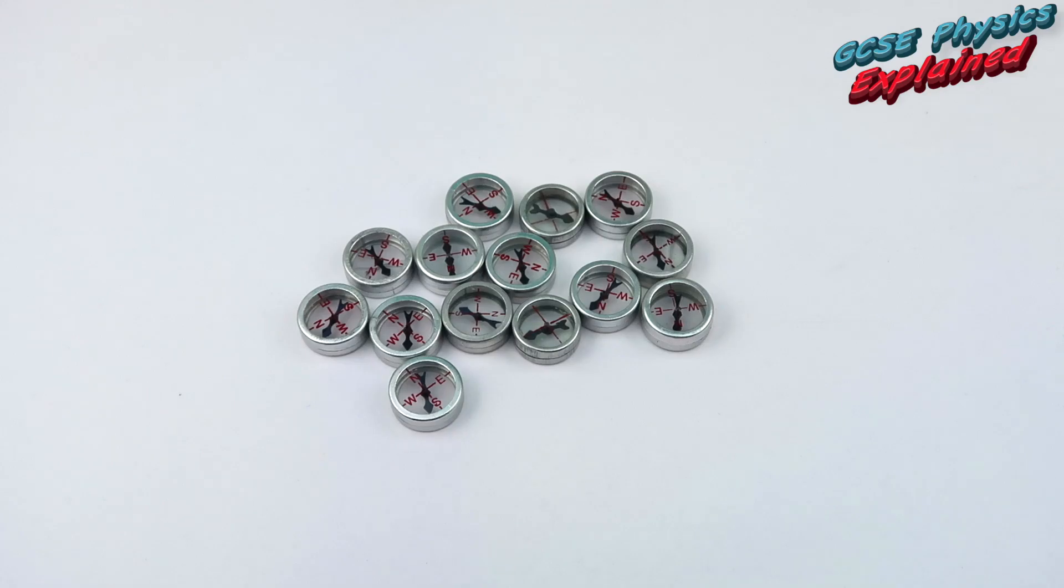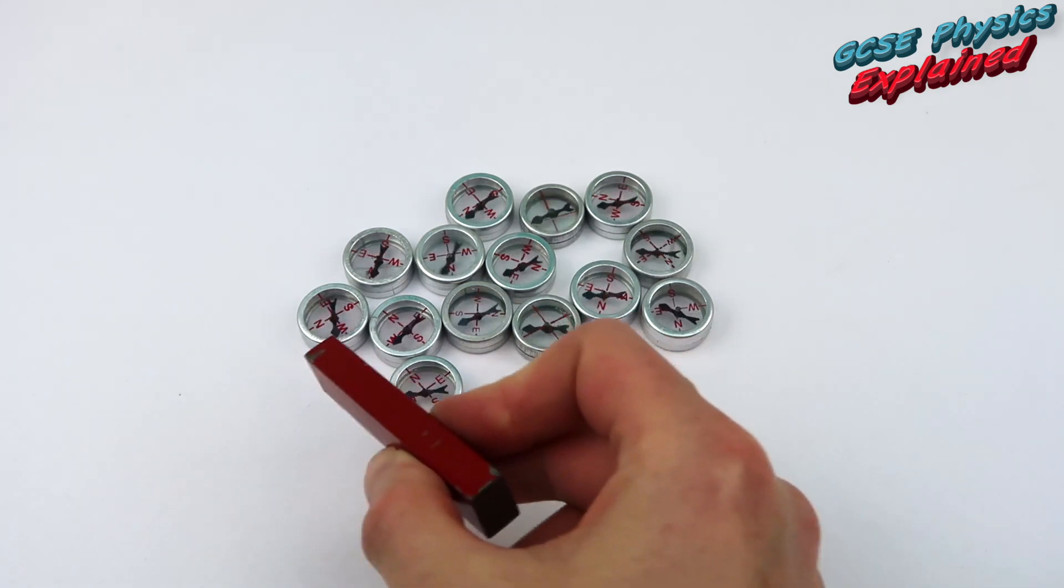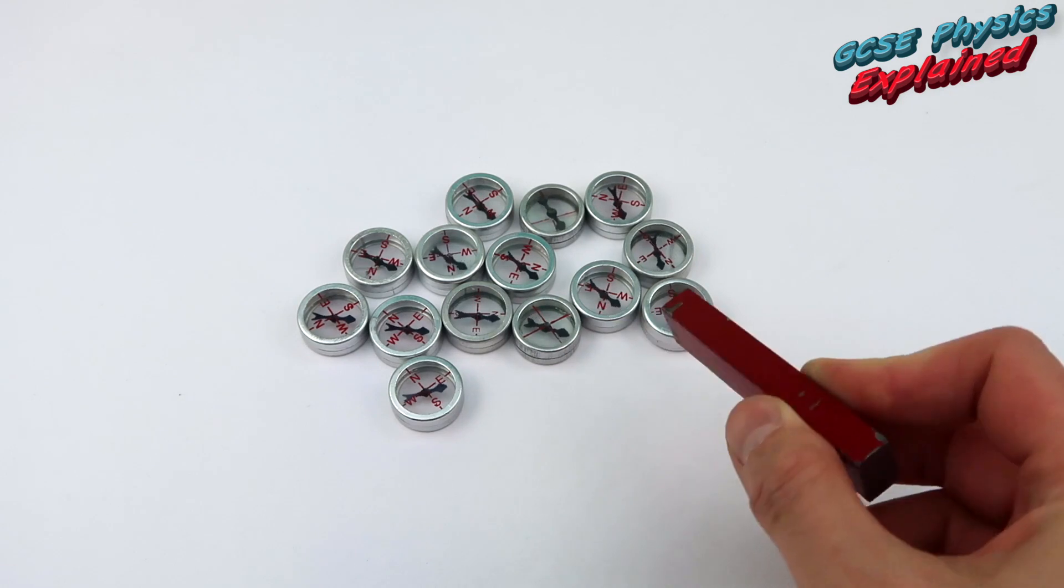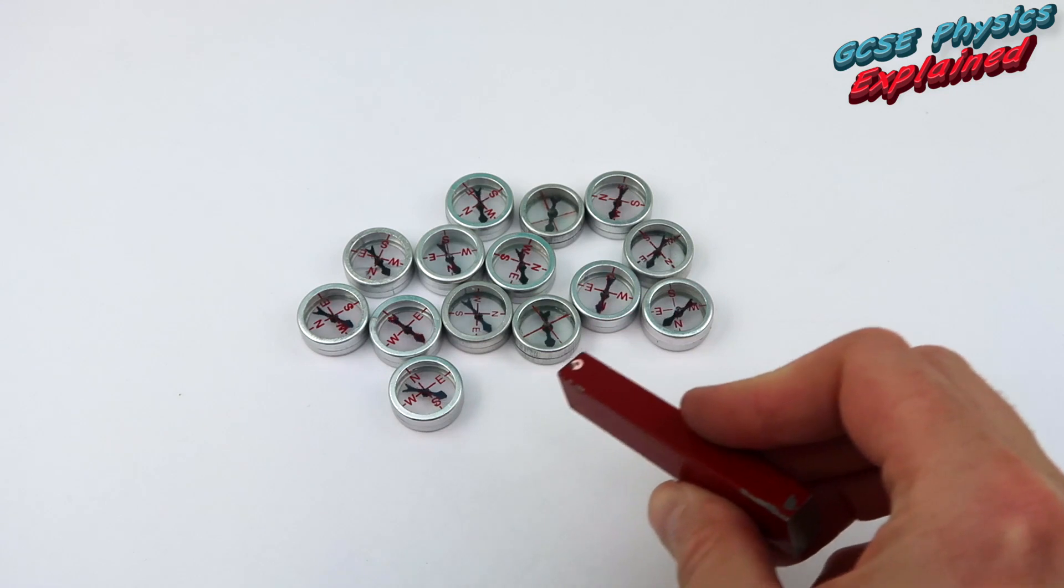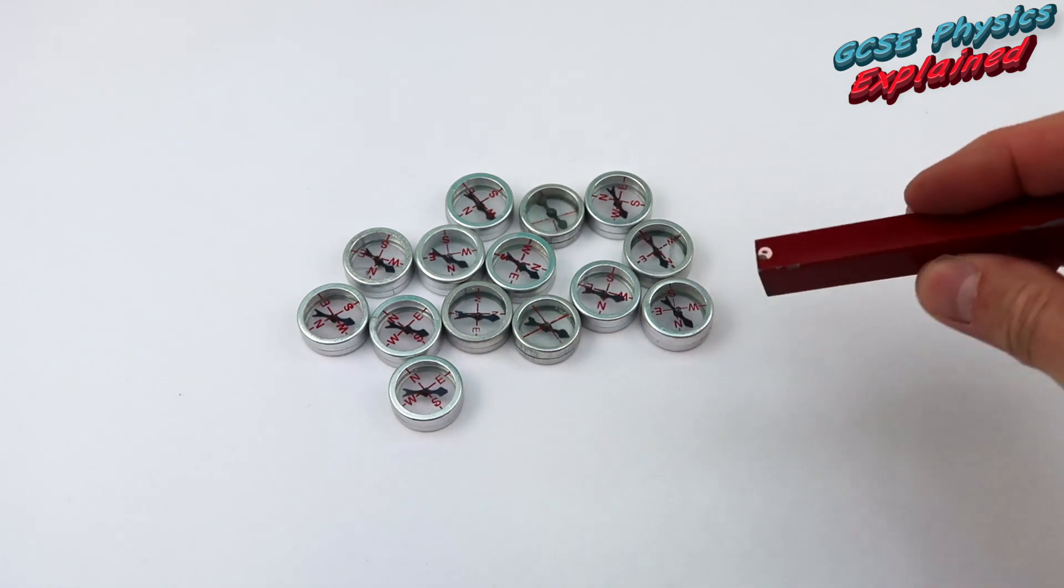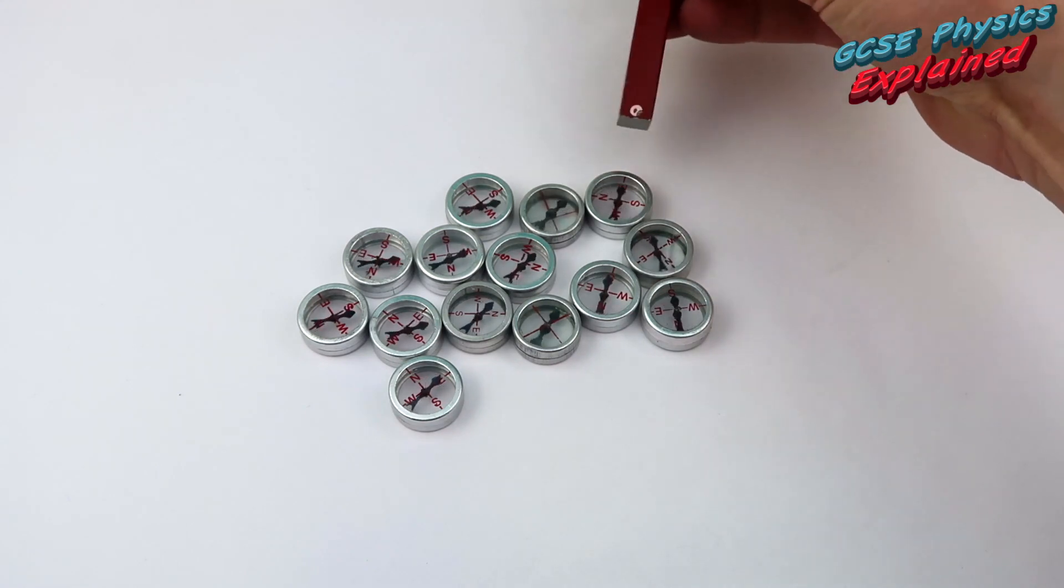Right, these are all plotting compasses. Now you can use plotting compasses in order to plot the magnetic field of a bar magnet and that's what you need to do for your GCSEs. If I put a bar magnet next to these compasses, you can see that they all align with the bar magnet's magnetic field rather than the Earth's magnetic field and that's because the bar magnet's magnetic field is a lot closer.